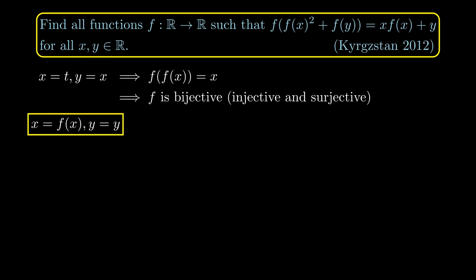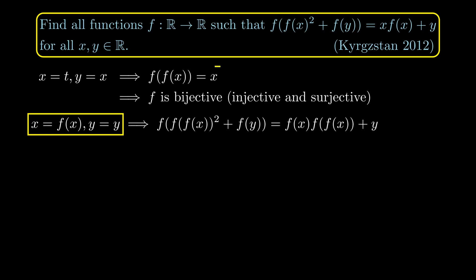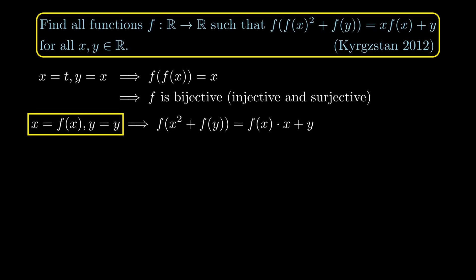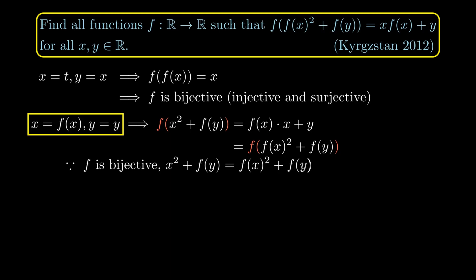Now set x = f(x) and y to be a free variable in the given functional equation. Notice that because f(f(x)) = x, we can replace those terms, and observe that the right-hand side is still the same as the original equation. So we can write d = f(f(x)² + f(y)). Since f is injective, we can remove the outer f from both sides, giving x² + f(y) = f(x)·x² + f(y), which implies f(x) = ±x for every x.